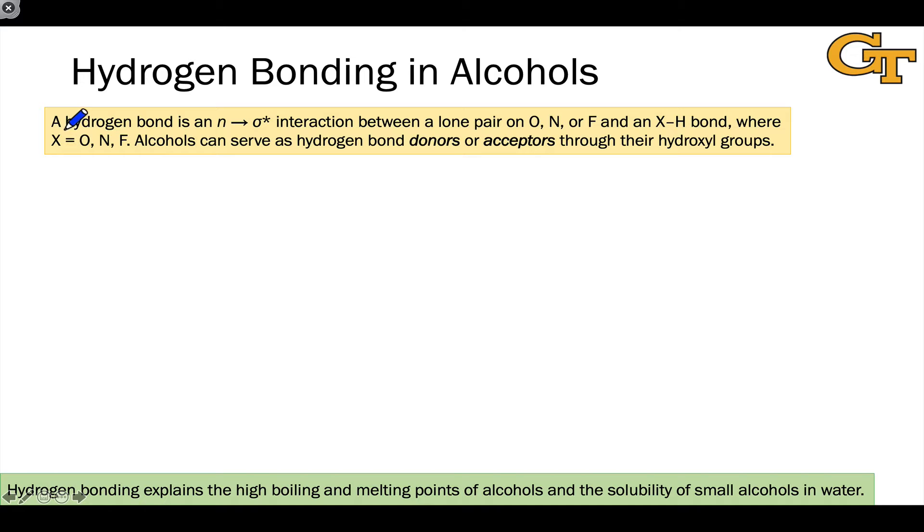A hydrogen bond is an n to σ* orbital interaction between a lone pair on oxygen, nitrogen, or fluorine and an X-H bond, where X is oxygen, nitrogen, or fluorine.